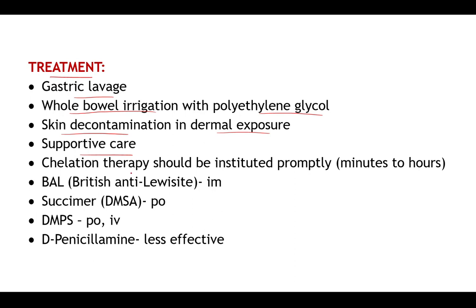Chelation therapy should be instituted promptly — within minutes to hours. This may be done with BAL (British Anti-Lewisite), which is administered by intramuscular route. Then succimer, also known as DMSA (dimercaptosuccinic acid), is given by the oral route. DMPS is another chelating agent which may be given per oral or intravenous route.